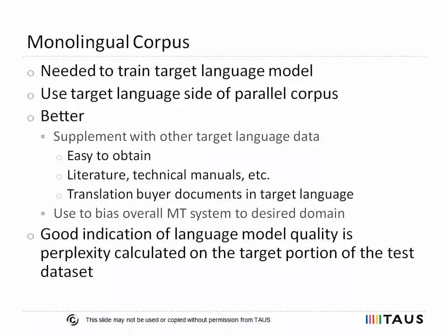As described before, a language model that assigns probabilities to target word sequences and is built on a monolingual dataset is an essential part of any SMT system. The classical approach to train a language model is to use the target side of the parallel corpus. However, in practice, additional monolingual information is involved to enhance the quality of the language model, and there are several advantages of this approach.